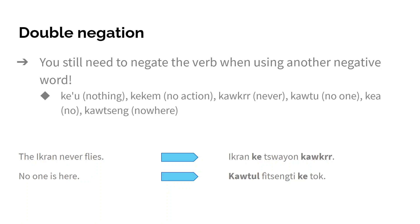The same applies for the next sentence: 'No one is here.' In Na'vi this is 'kawtu tsawkrr ke tok.' 'Kawtu' means 'no one,' and 'kawtu' then gets the '-l' ending because 'tok' is transitive. But even though we have 'no one' in the sentence, we still have to negate the verb. So 'kawtu versengti ke tok.'